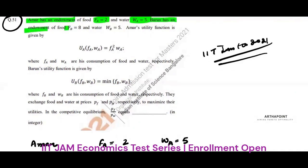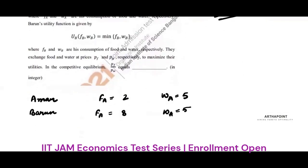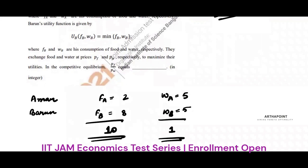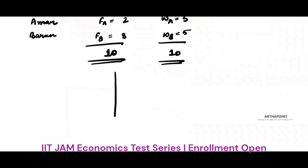Byron has an endowment of 8 units of food and 5 units of water — let's denote these as FB and WB. The total amount of food available in the economy is 10, and total water is also 10. So if you were to make an Edgeworth box, it would be a 10×10 square Edgeworth box.